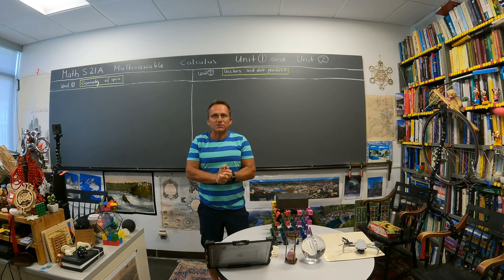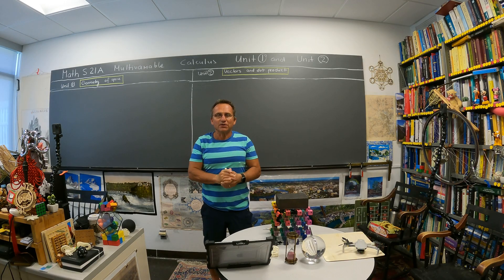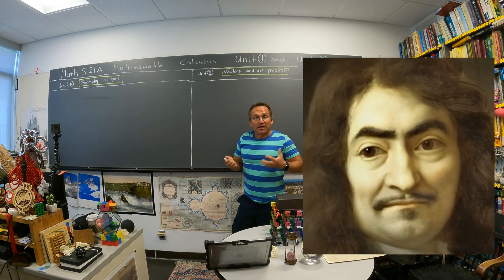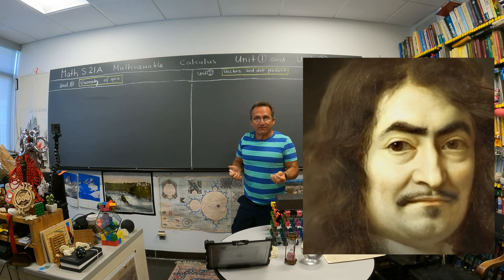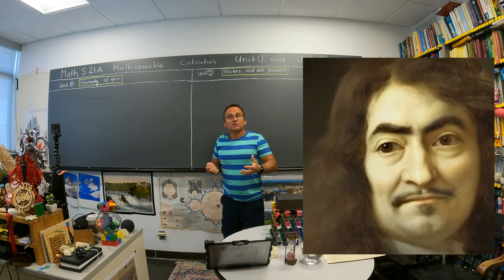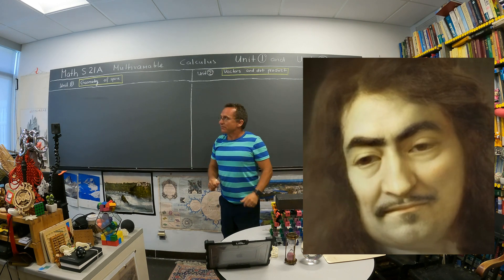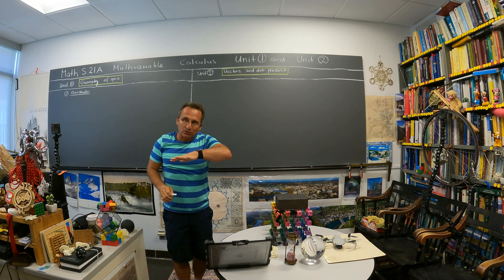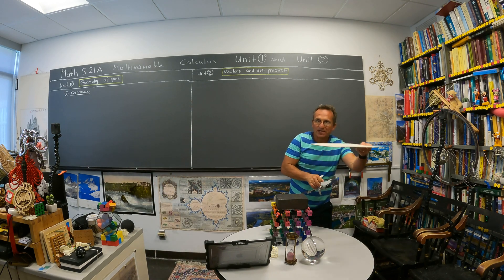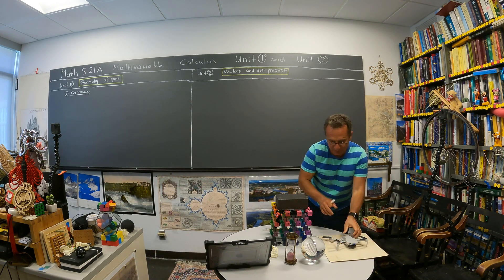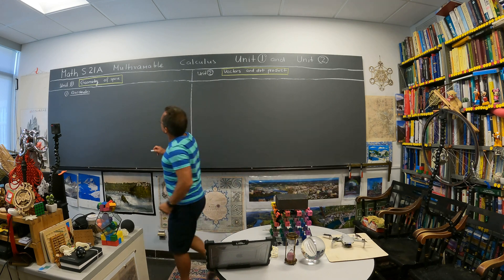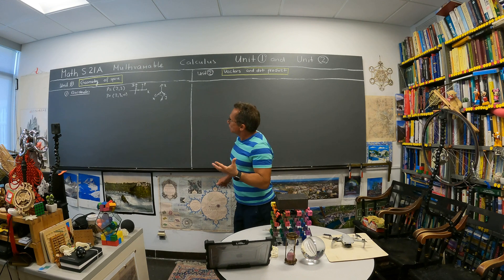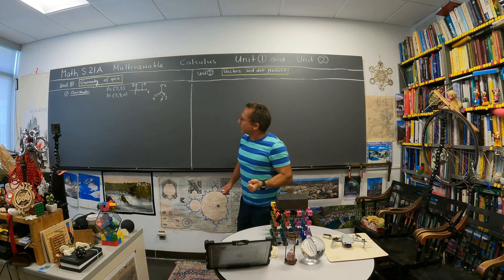Welcome to the first two units. We talk first about the geometry of space. René Descartes in 1637 introduced coordinates, merging algebra with geometry. We always distinguish the two-dimensional plane, which has only two coordinates, from space, where you also have a third coordinate. That's a notion which allows us to compute with geometry.